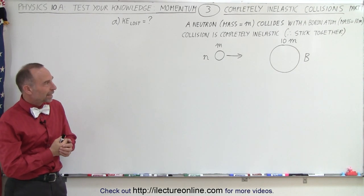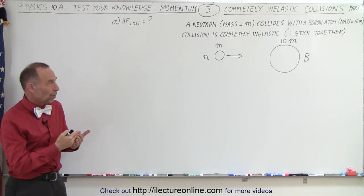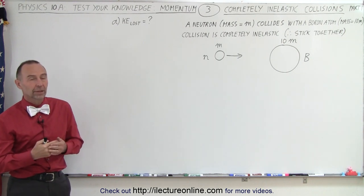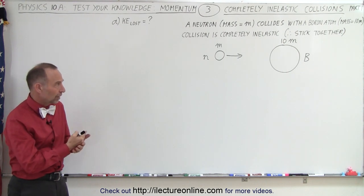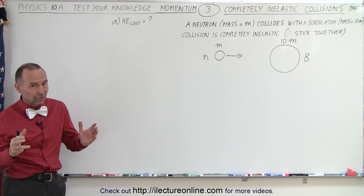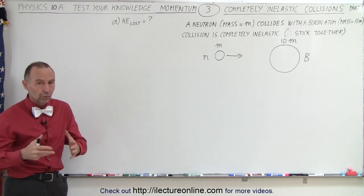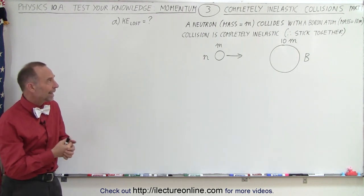Welcome to our lecture online. Here we have a situation where a neutron collides with a boron. Turns out that the mass of a neutron, if we call that equal to m, then the mass of the boron with the protons and the neutrons in the nucleus equal 10m.